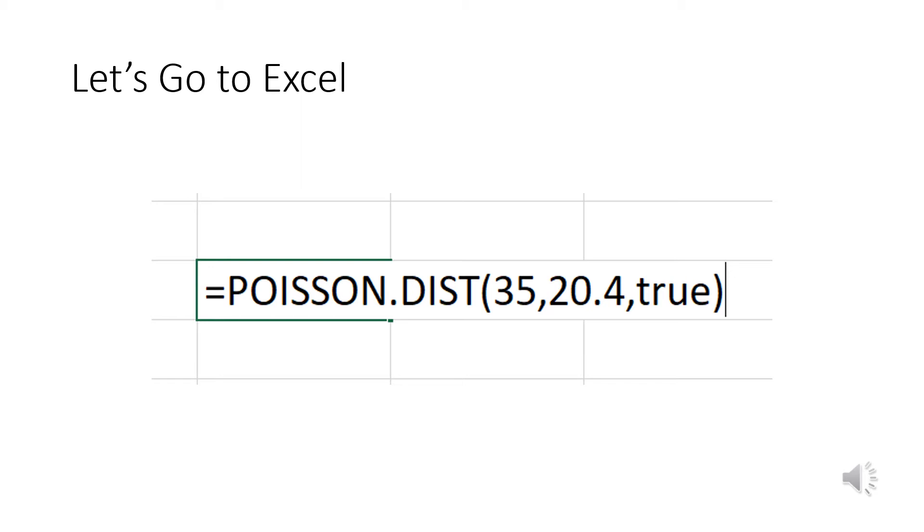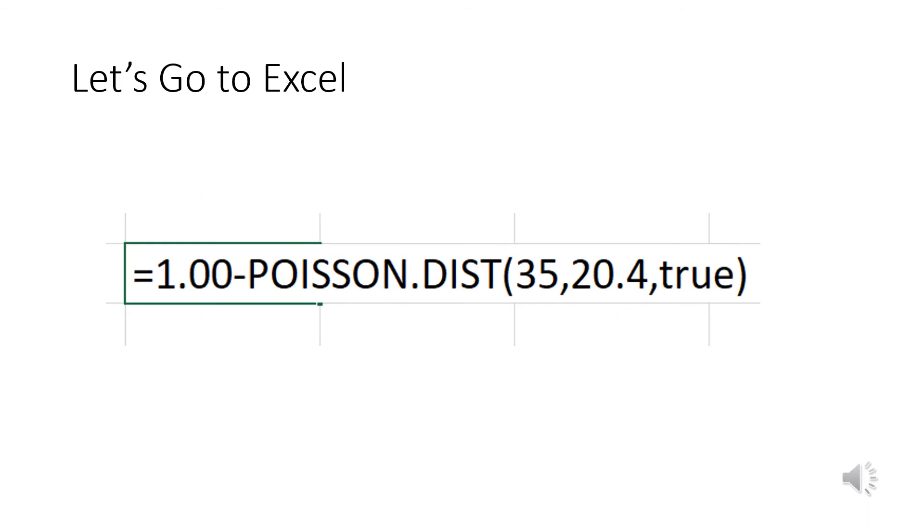Now this isn't quite right, because what Excel will do—what we're telling it now—is we want 35 or less. We want 35 or more, right? So let me show you the trick to that.